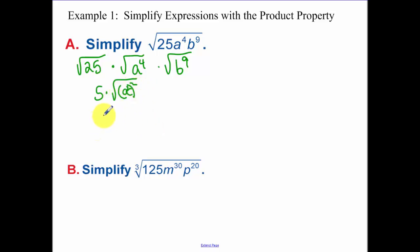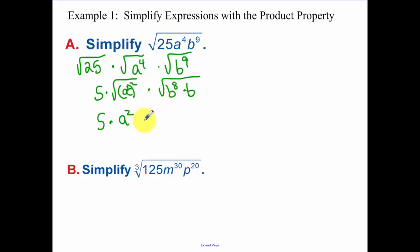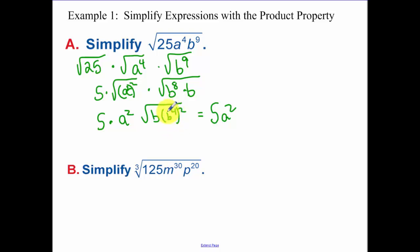Because the squared and the squared are going to cancel, so you're going to end up with a squared. Now, b to the ninth — you have to separate that into b to the eighth times b, because eight is an even number and your index is even. So then you can separate that even further into b times b to the fourth squared, because we need the square root and the squared to cancel. So that simplifies to 5a squared. The b to the fourth can break out of that radical, and then we're just left with a square root of b underneath our radical.